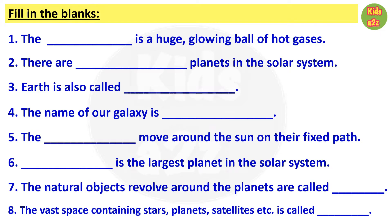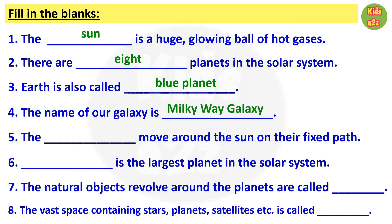Here kids need to fill in the blanks with the appropriate word. First one: the dash is a huge glowing ball of hot gases. Answer is Sun. Number two: there are dash planets in the solar system. Answer is eight. Number three: Earth is also called dash. Answer is blue planet. Number four: the name of our galaxy is Milky Way galaxy.